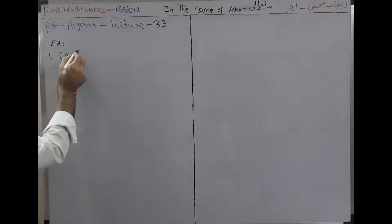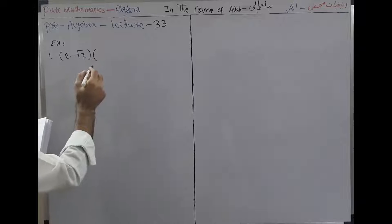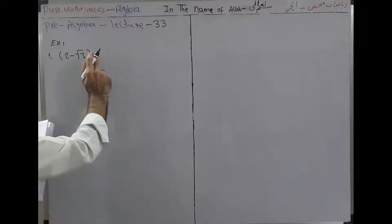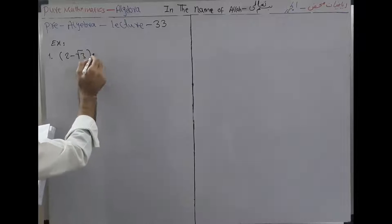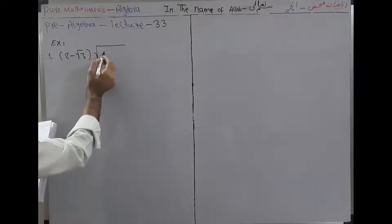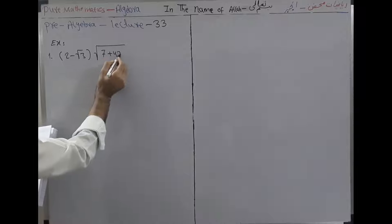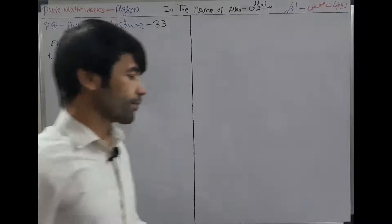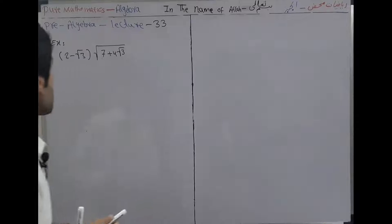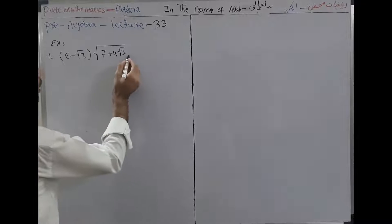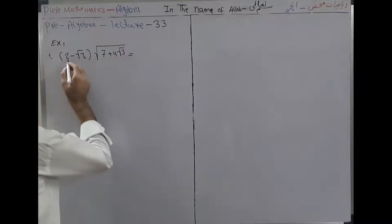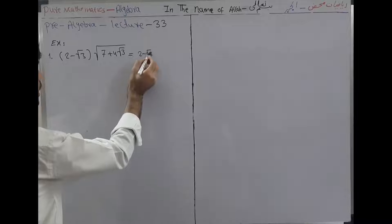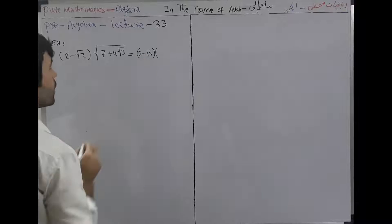The first expression is: (2 - √3) multiplied by (2√7 + 4·√3). We want to solve this question. It is equal to (2 - √3) into...